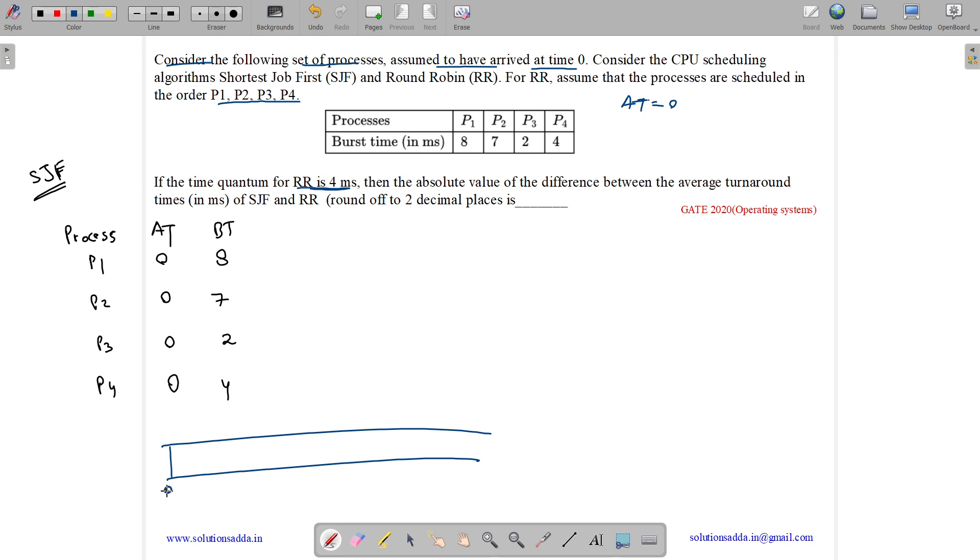So initially at time zero, all the processes are available and it is non-preemptive as SJF by default is non-preemptive. First, the shortest burst time is of P3, so we will schedule P3 from 0 to 2. Then we have completion times, so P3 gets completed at time 2.